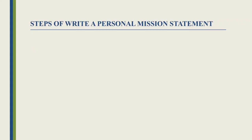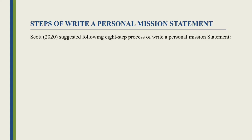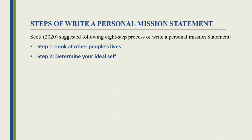Now we will look at the steps to write a personal mission statement. Step one: look at other people's lives — learn about and observe how different people are living. Step two: determine your ideal self — know yourself, see what is there and what is not, what is right and what is wrong in you.